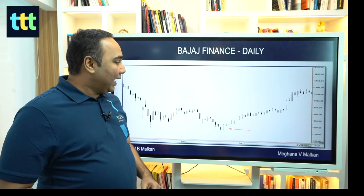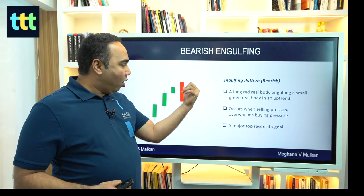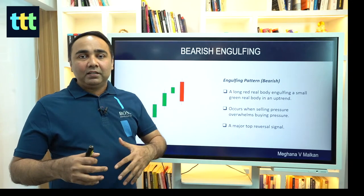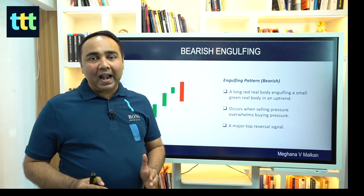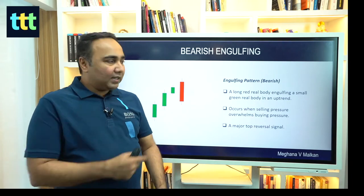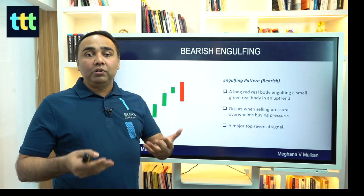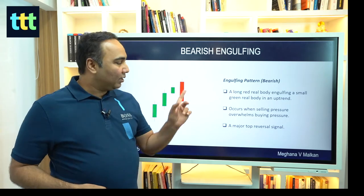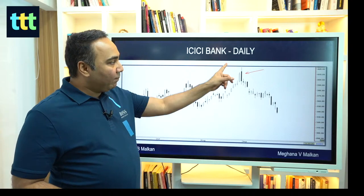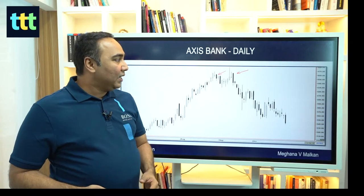Then we have Bearish Engulfing — the opposite of bullish engulfing. A long red body takes over after an uptrend, signaling bears are gaining control. Even if you forget the names like engulfing, harami, and doji, just understand: green or red, big or small — who is gaining control and who is losing control. That's how simple it is. Bearish engulfing after an uptrend leads to a strong downtrend.